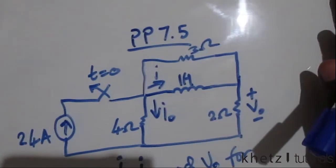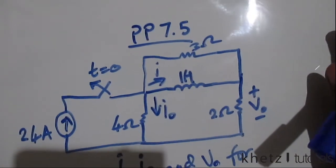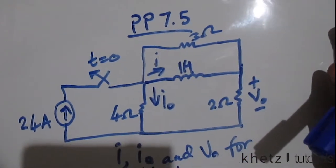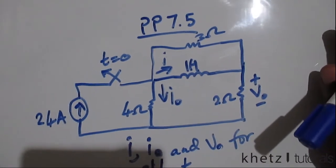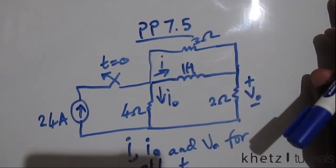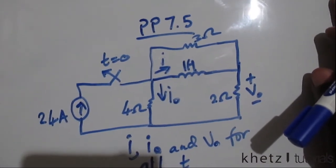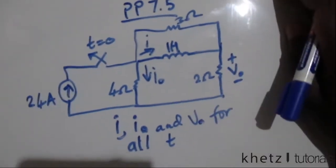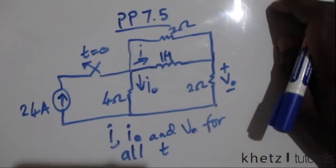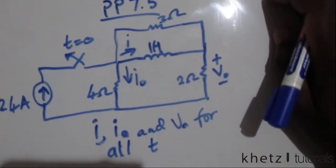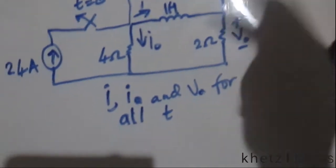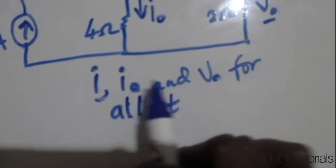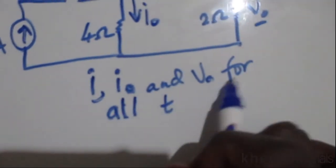Welcome to Cat's Tutorials. In this video I'll be covering practice problem 7.5. If you haven't subscribed to my channel, please go ahead and subscribe, and if you like this video just hit the thumbs up button. So let's get into the question: find i, i_o, and v_o for all t.